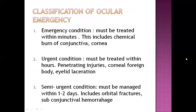To classify ocular emergencies, we have various conditions: emergency condition, urgent condition, and semi-urgent condition. Emergency condition must be treated within minutes — it includes chemical burns of the conjunctiva and cornea. Urgent condition must be treated within hours — it includes penetrating injury, corneal foreign body, and eyelid laceration. Semi-urgent condition must be managed within one to two days — it includes orbital fracture, and blunt trauma to conjunctiva and cornea.